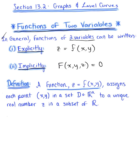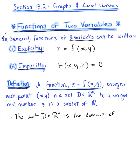Here is our formal definition for a function of two variables. A function z equals f of x, y assigns each ordered pair in a set D in R² to a unique real number z in a subset of the reals. We say that the set D is the domain of our function — the set of all ordered pairs is the domain of our function with two variables.